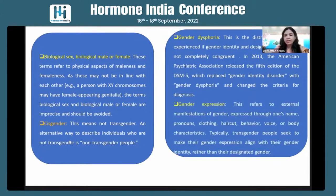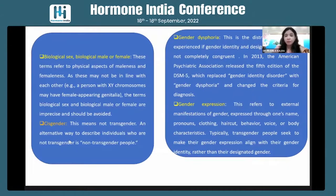Gender expression refers to the external manifestation of gender — such as the name the person uses, the pronouns (he or she), clothing, haircut, behavior, voice, body characteristics, and mannerisms. Most of the time you will see that transgender people will try to align their gender expression with their gender identity rather than their designated gender at birth. So if a transgender female, she will try to behave like a female; if a transgender male, he will try to behave like a male.